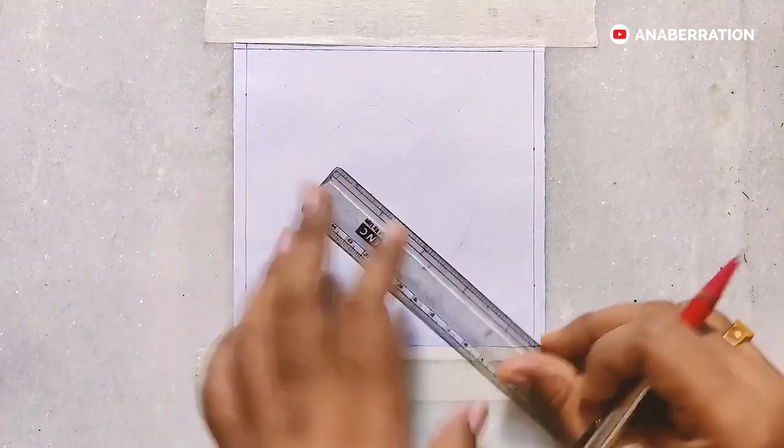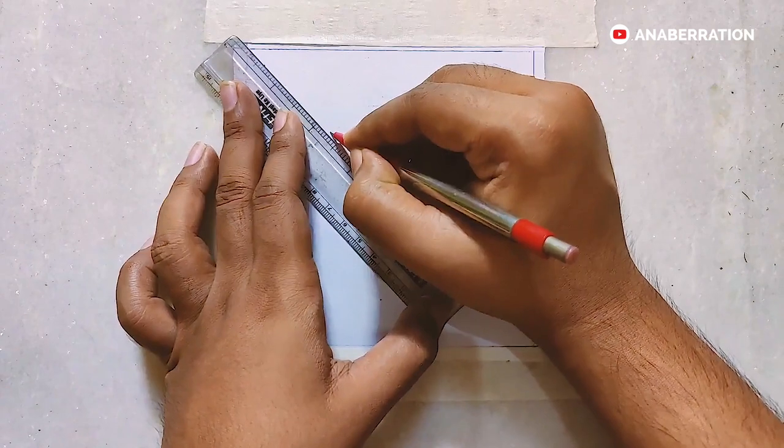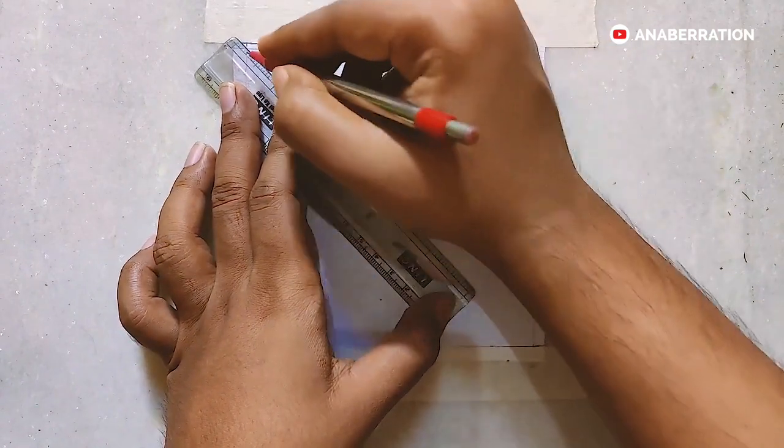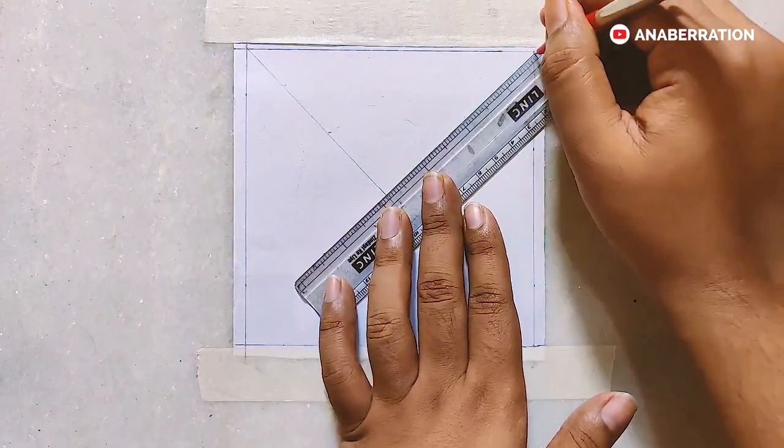So our four-side border is now done. It looks a little bit uneven because there is some part of the paper which is hidden by the masking tape. Now I will make a center circle. For that I am just finding the center.